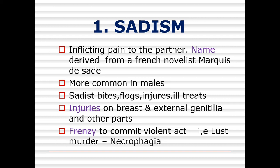Sadism is giving pain to one's partner. This name is derived from a French novelist, Marquis de Sade, whose characters are involved in this activity. It is more common in males. The sadist bites, flogs, injures, and ill-treats the partner. Injuries on the body of the partner are found on the breast, external genitalia, and other parts. The sadist has a severe desire or frenzy to commit violent acts — lust murder — and may eat or desire to eat body parts of the dead partner.